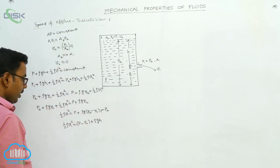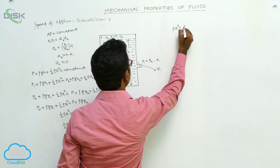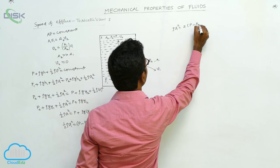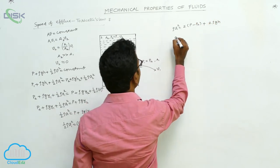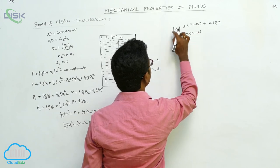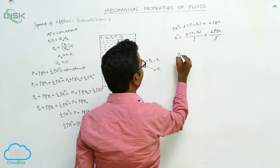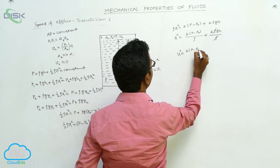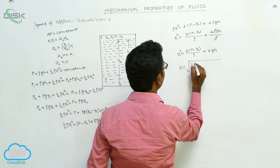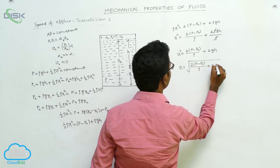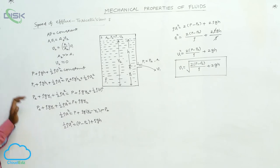Solving for V1: ρV1² = 2(P − PA) + 2ρgH, so V1² = 2(P − PA)/ρ + 2gH. Therefore, V1 = √[2(P − PA)/ρ + 2gH]. This is the velocity of the outflow fluid from the orifice, derived using Bernoulli's theorem — this is called Torricelli's theorem.